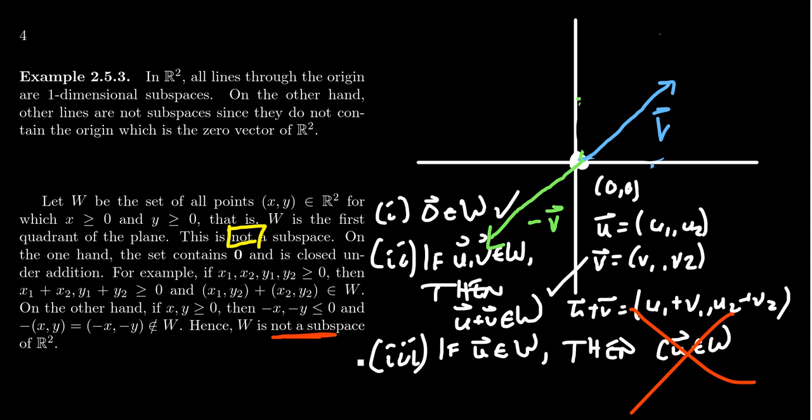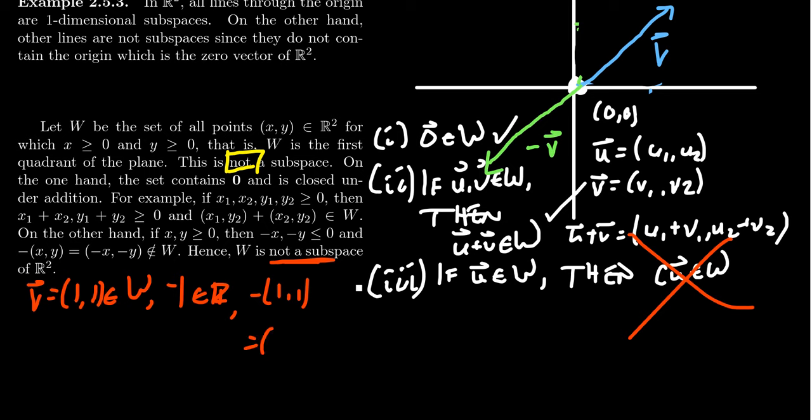And we should be very explicit about our counterexample. Say, V is the vector (1, 1). Notice that belongs to W. Let's take the scalar negative one, which is a real number. But on the other hand, if you take negative one times (1, 1), that is equal to (-1, -1), which does not belong to W. And so, because of this counterexample right here, we see that condition three fails. It fails.